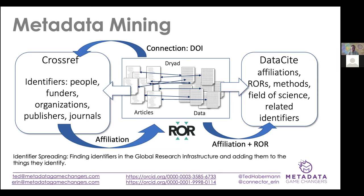I also use a term called 'identifier spreading' — finding identifiers in Crossref or Datacite repositories and then adding them to the things they identify. One of the interesting things is taking a domain repository that has a community built around it. Those community members and their affiliated organizations generally make a number of different contributions — data sets or papers based on datasets in the repositories. If you can find identifiers for those people or organizations once, anywhere in the combined data and articles, then you can spread that identifier through other datasets those people and organizations have contributed to.